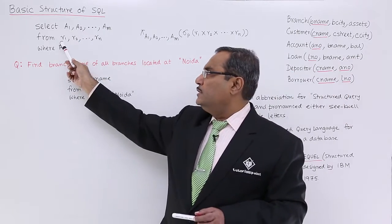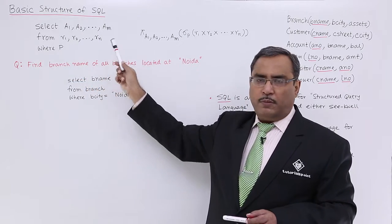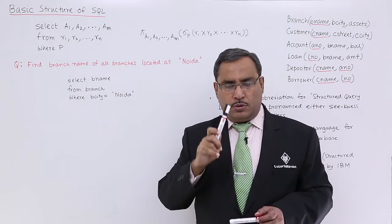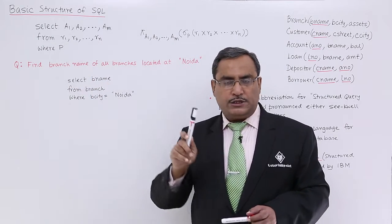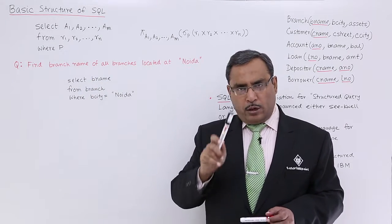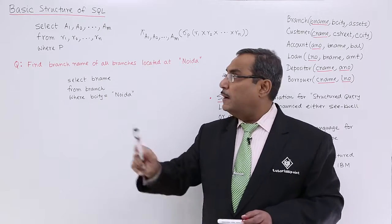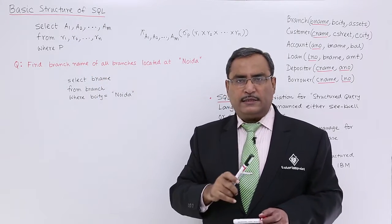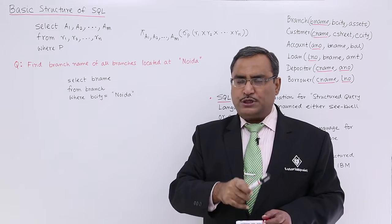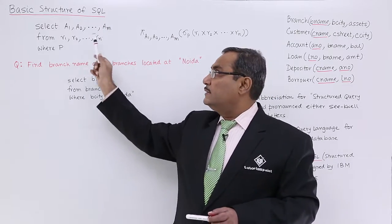In this way, this particular relational algebraic expression is corresponding to this basic structure of this SQL. That means whatever relation names will be mentioning after FROM, they will get connected through Cartesian product, and then whatever the condition or predicate will be mentioning after WHERE, that will be coming as a suffix for σ, and then A1, A2, dot dot dot Am they will be coming as a suffix for projection operation π to work on this resultant relation.